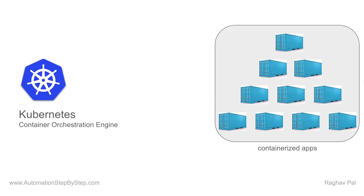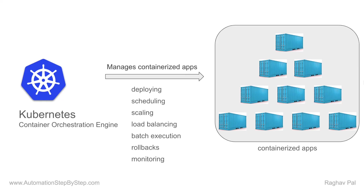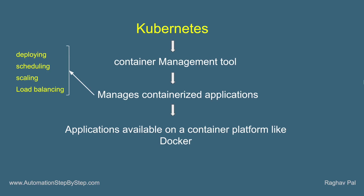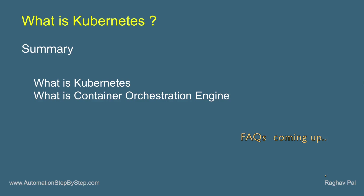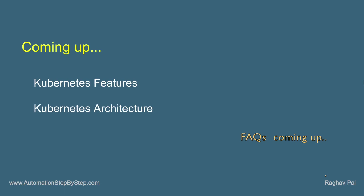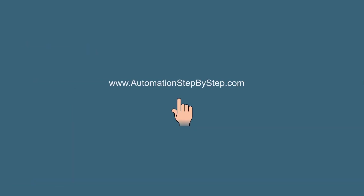Kubernetes is a container orchestration engine that takes care of managing containerized apps — all the processes we discussed. By now you should have a good understanding of what Kubernetes is, what a container orchestration engine is, and why we need Kubernetes. In the coming sessions, we will go deeper into Kubernetes features, Kubernetes architecture, and we will also do practicals with Kubernetes. Thank you for watching.